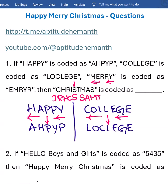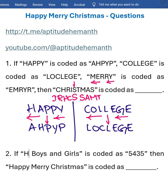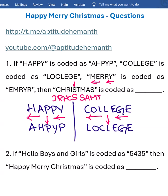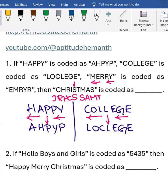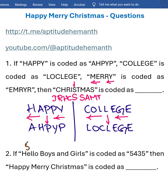Now, if you see the second question regarding coding and decoding — similar questions are given in Accenture also — hello boys and girls is coded as 5-4-3-5. This is nothing but the number of letters in each word: hello has 5, boys has 4, and has 3 letters, girls has 5 letters. Same way, if you try for Happy Merry Christmas: Happy is 5 letters, Merry is 5 letters, Christmas is 9 letters.